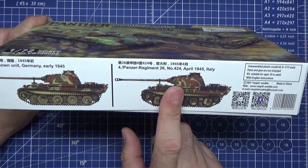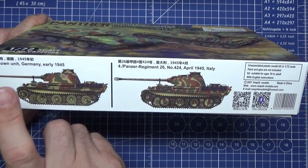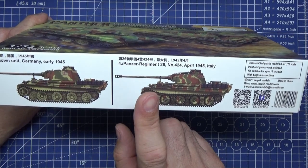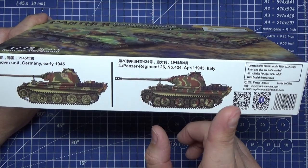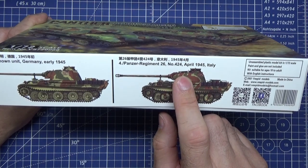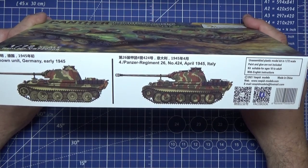There are a couple of color schemes here. You've got unit unknown Germany 1945, Panzer Regiment 26 number 424 from April 1945 in Italy.